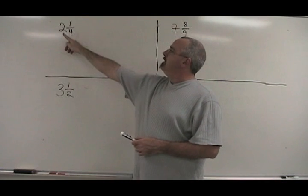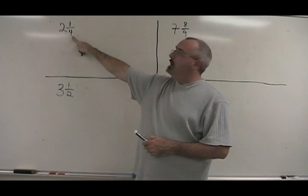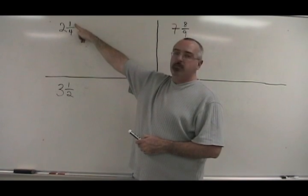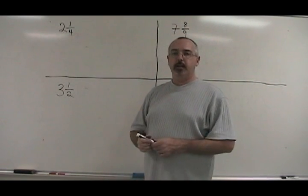The rule is, you multiply the big number by the denominator, and you add the answer to the numerator. That gives you the new numerator, while the denominator stays the same.